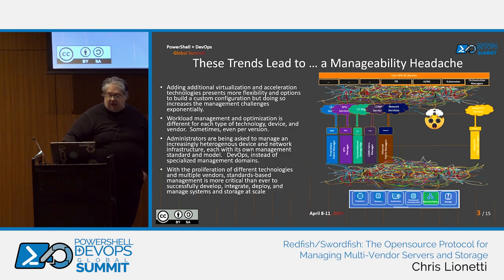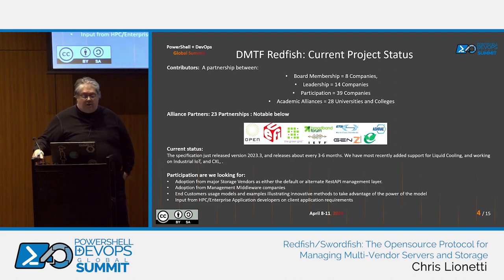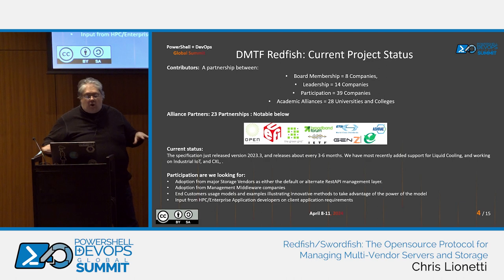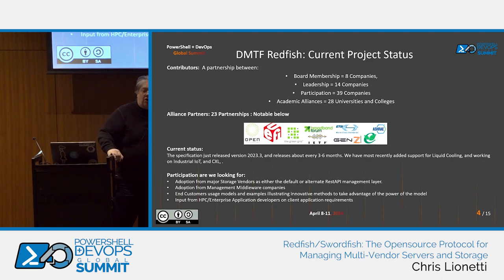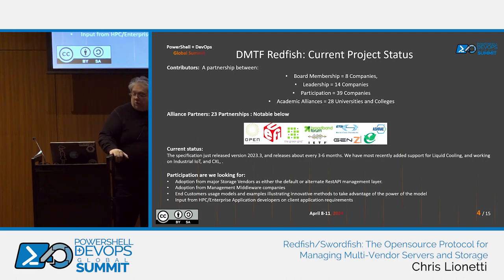Redfish is made up of a huge industry coalition. There are eight board member companies, 14 leadership companies, 39 participating companies, 28 colleges participating, and another 23 partnerships with groups like the Open Fabric Alliance, Gen Z, ASHRAE, and UEFI. All these different partners input into the protocol for what they need. For example, ASHRAE and EPA want to gather information about server power consumption, so they partner with the Redfish protocol and actually write that capability.